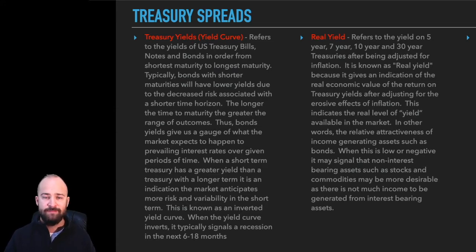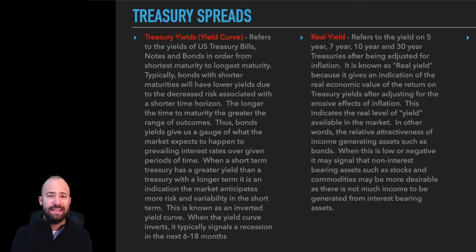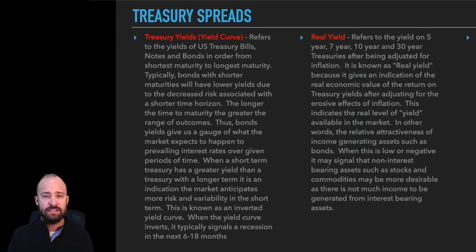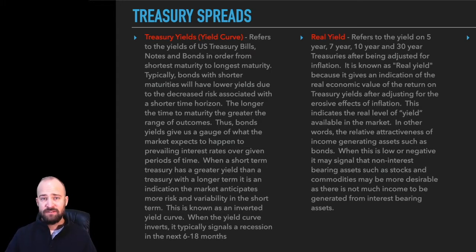Why does it matter to classify these things based on their length to maturity? That's exactly what's at the foundation of the yield curve and maturity spreads. With differing time frames comes different levels of risk. You can forecast what's likely to happen in the next week with a lot more accuracy than over the next year, ten years, or a hundred years. The more time involved, the broader the range of outcomes — and that is what risk is. With greater time comes greater risk, so investors need to be compensated with higher rates of return.